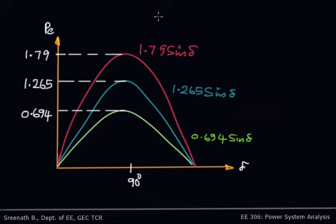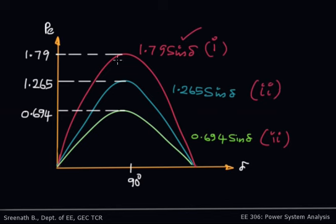Now we plot all three power angle curves: Case 1 is 1.79 sin δ, Case 2 is 0.694 sin δ, and Case 3 is 1.265 sin δ. For Case 1, the healthy system can transfer a maximum of 1.79 per unit. During the fault condition the maximum transferable power drops to its minimum, and after the fault is removed with one line open, the system can transfer up to 1.265 per unit.